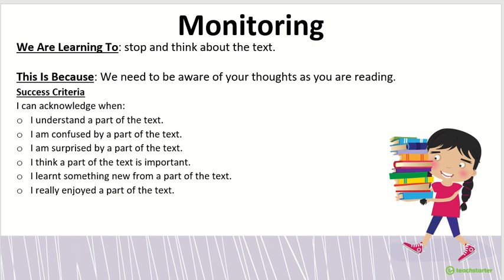With monitoring, what we're learning to do is to stop and think about the text, because we need to be aware of what we're thinking while we're reading. The criteria involves being able to acknowledge when you understand a part of the text, when you're confused, when you're surprised, when you think there's a part of the text that's important, when you've learned something new, and also when you have really enjoyed a part of the text.